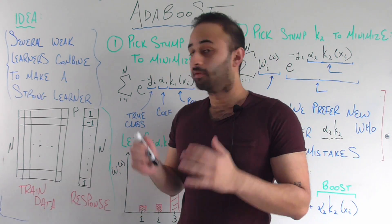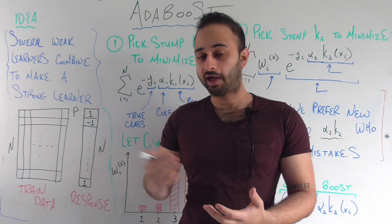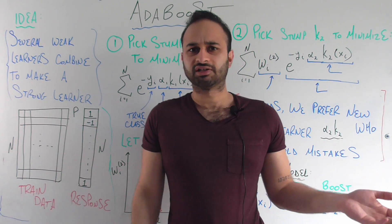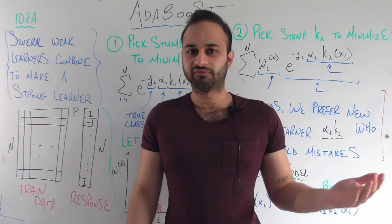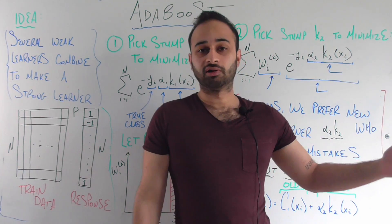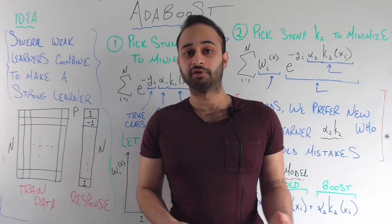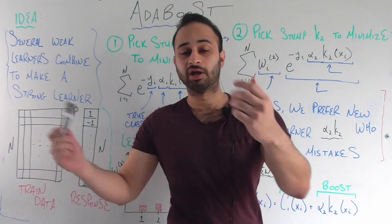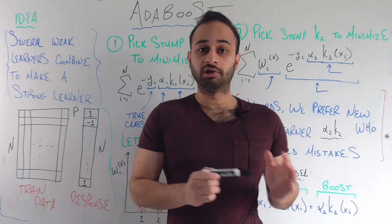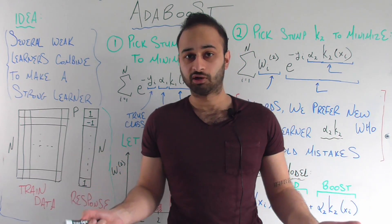So as we know we're going to combine several weak things into a strong thing. First of all, let's just say you have some dataset. Just to take an example from a previous video, let's say we're trying to predict whether or not a student will get into their top choice medical school. So our responses are ones and negative ones — one if they get in and negative one if they don't.